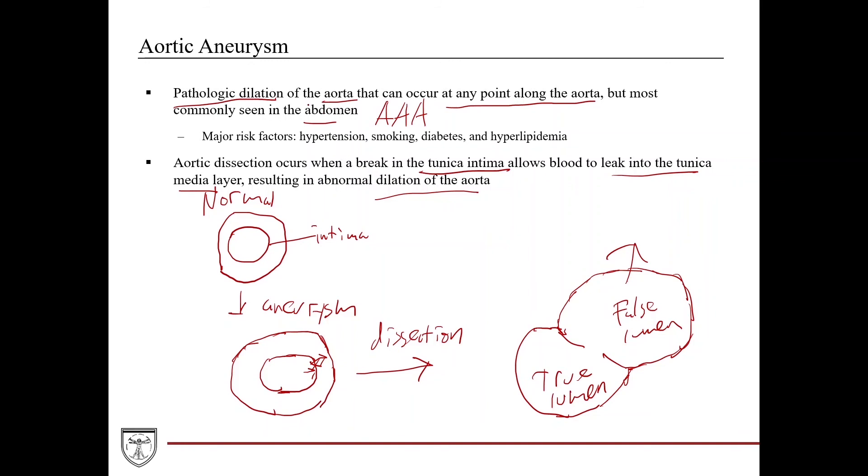And something I forgot to mention here is the major risk factors for both aneurysms and dissection is hypertension because if you have elevated blood pressure, just like in the smaller arteries, in the coronary arteries, if you're pressing against this, that can obviously cause weakness in the wall and break down eventually. Smoking, just like how it can damage the coronary vessels, it can also damage the aorta. It's the same thing. Diabetes and hyperlipidemia.